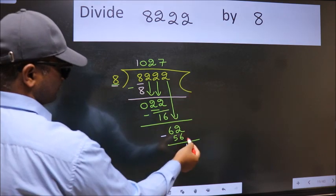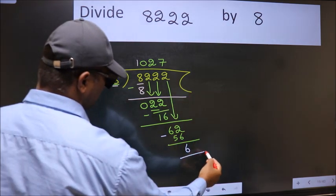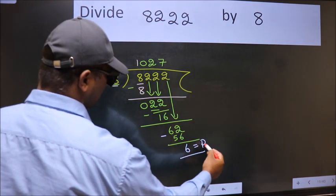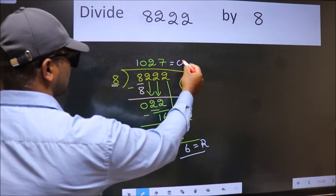No more numbers to bring down, so we stop here. This is our remainder, and this is our quotient.